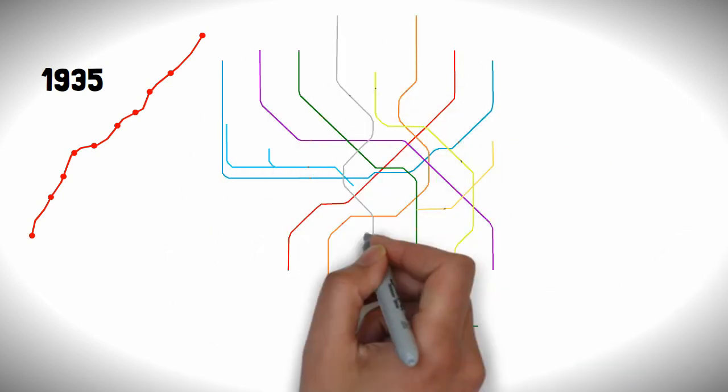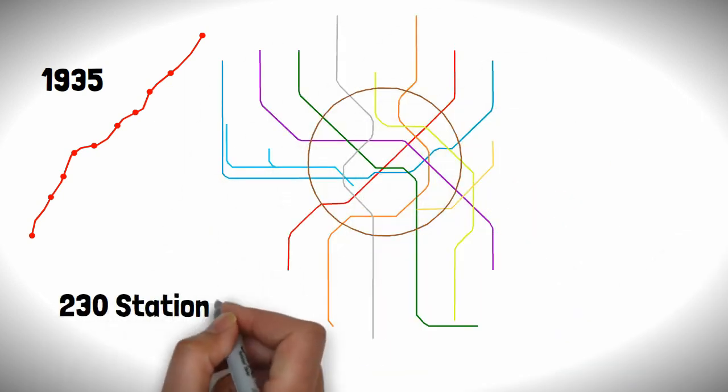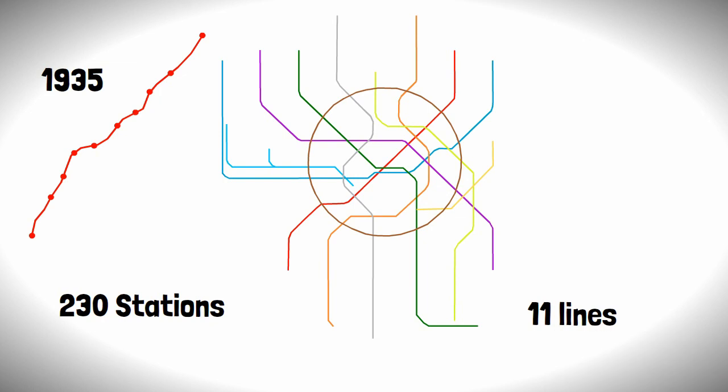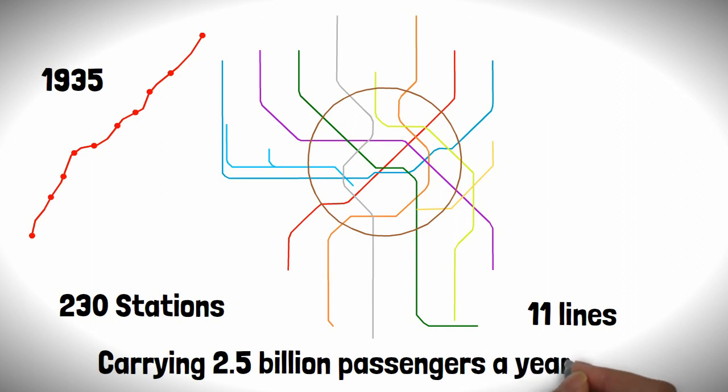Ever since the first line opened in 1935, the system has grown from strength to strength, expanding to over 230 stations over 11 lines, becoming the busiest system in Europe, carrying over 2.5 billion passengers a year.